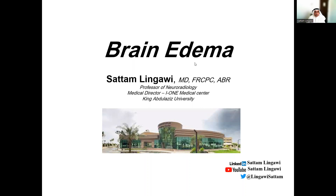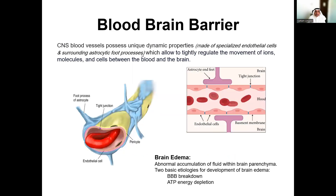Hello, everyone. This presentation is a short presentation focusing on the different types of brain edema. Let's start by understanding the concept of the blood-brain barrier. The blood-brain barrier is an anatomic and physiologic barrier within the central nervous system that is composed within the wall and surroundings of the capillaries within the brain.